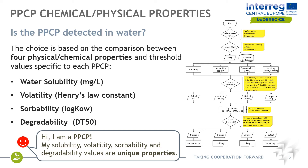The first question that ModProcon tries to answer is whether the PPCP can be detected in water. In order to answer this question, we investigate our database in which we have stored four physical-chemical properties of each PPCP: solubility, volatility expressed as Henry's constant, sorbability expressed as log KOW — which is influenced also by the polarity of the substance — and degradability, expressed as the DT50 of the contaminant. These properties are unique to each PPCP.